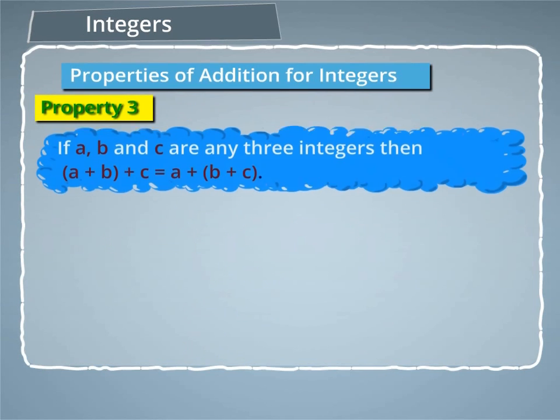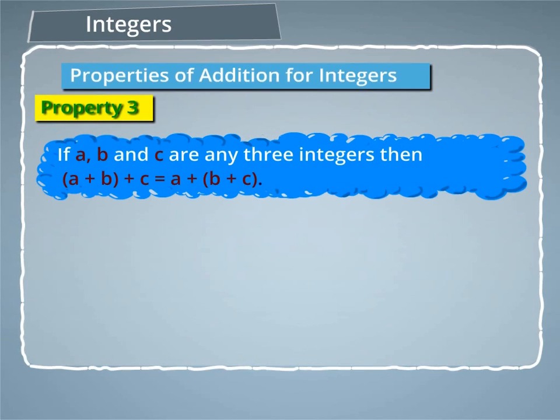Property 3: If A, B and C are any three integers, then A plus B plus C is equal to A plus B plus C. This is also called as associative property of addition of integers.